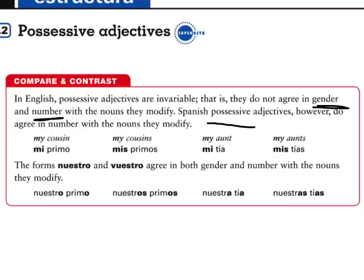Most of the possessive adjectives, however, just simply agree in number. Like, my cousin — mi primo. My cousins — mis primos. Two forms, nuestro and vuestro, agree in gender and number. Please remember that all adjectives in Spanish agree in number and gender.